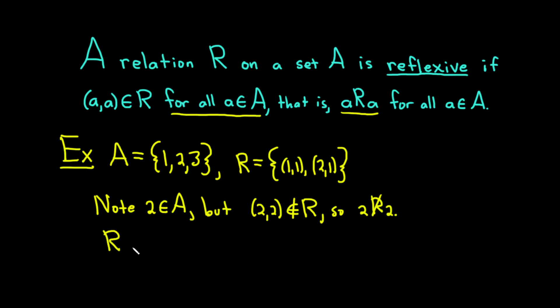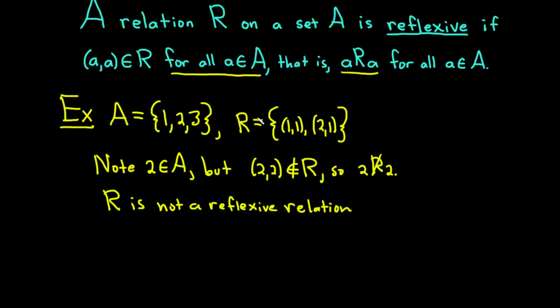R is not a reflexive relation. All right, let's do another example. So if (2,2) was in there and (3,3) was in there, then it would be reflexive. For example, let's say we have the set A containing